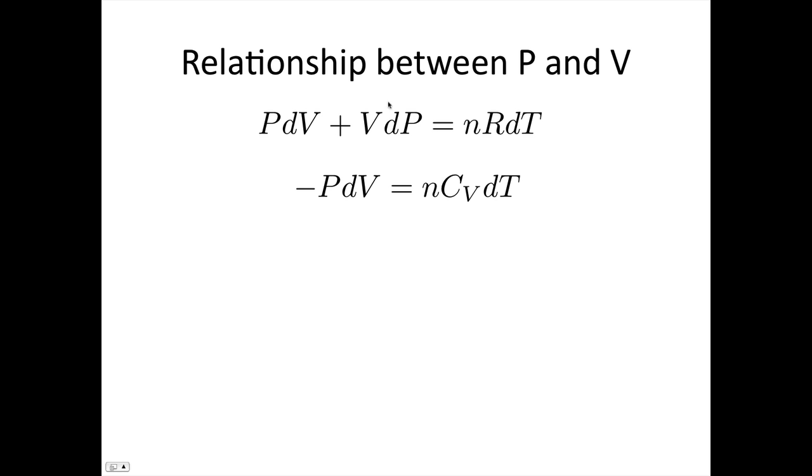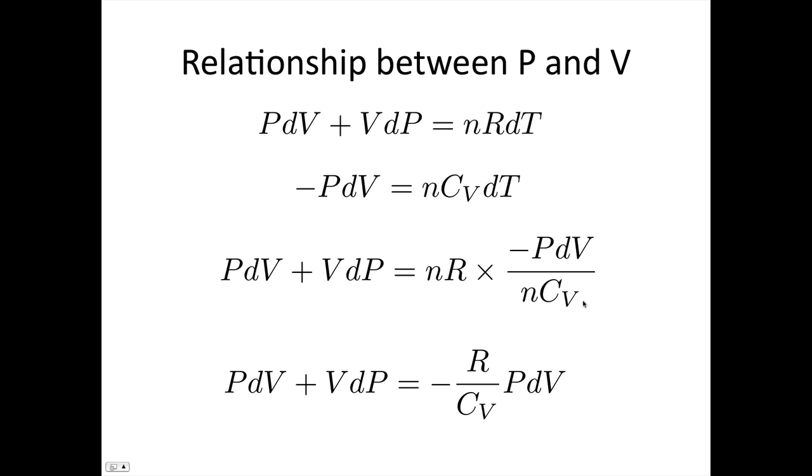Okay, now this is just what we had on the last slide. On the slide just before that, we showed that minus P dV was equal to nC_V dT. This was the constant volume case, and this was the adiabatic case, but the change in internal energy was the same. So what we're going to do now is replace this dT with this dT. So dT is equal to minus P dV over nC_V. And so we're just replacing that now. These n's will cancel out, and we have P dV plus V dP is equal to minus R over C_V times P dV.